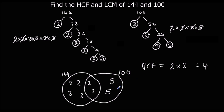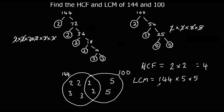The lowest common multiple is all of the numbers multiplied together. So we've got 2 times 2 times 2 times 3 times 3 times 2 times 5 times 5. This circle makes 144, so it's easier to write 144 times the remaining 5s — 144 times 5 times 5. You might need a calculator. The answer is 3,600.